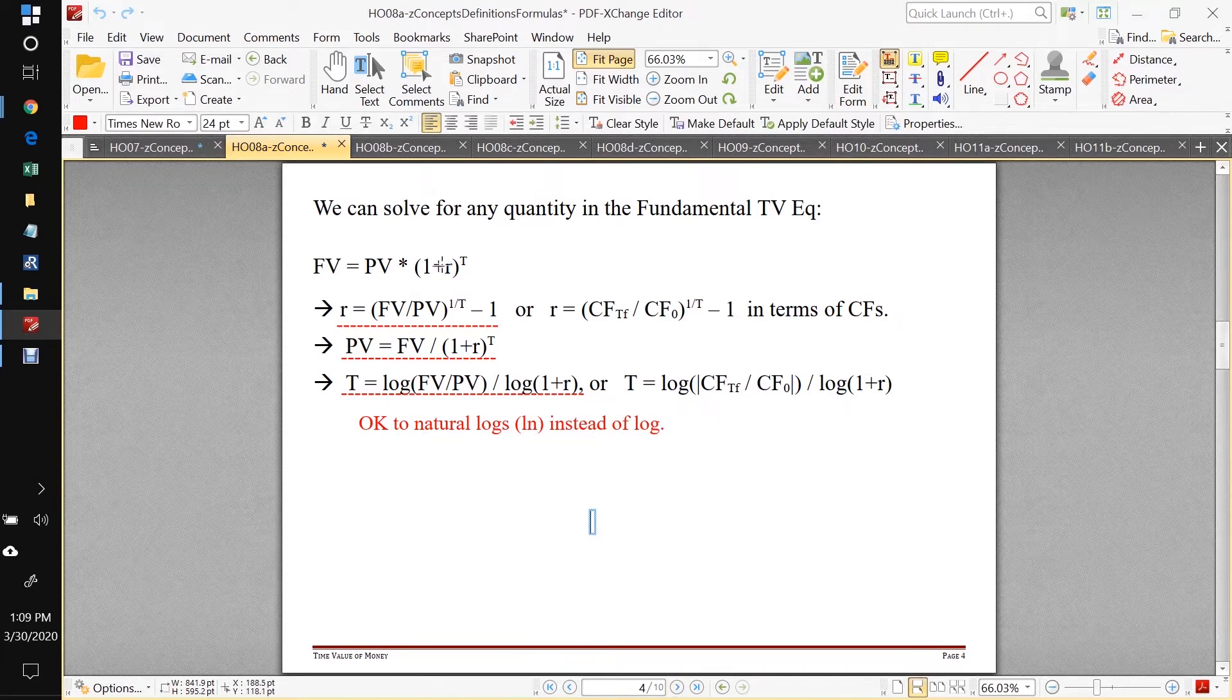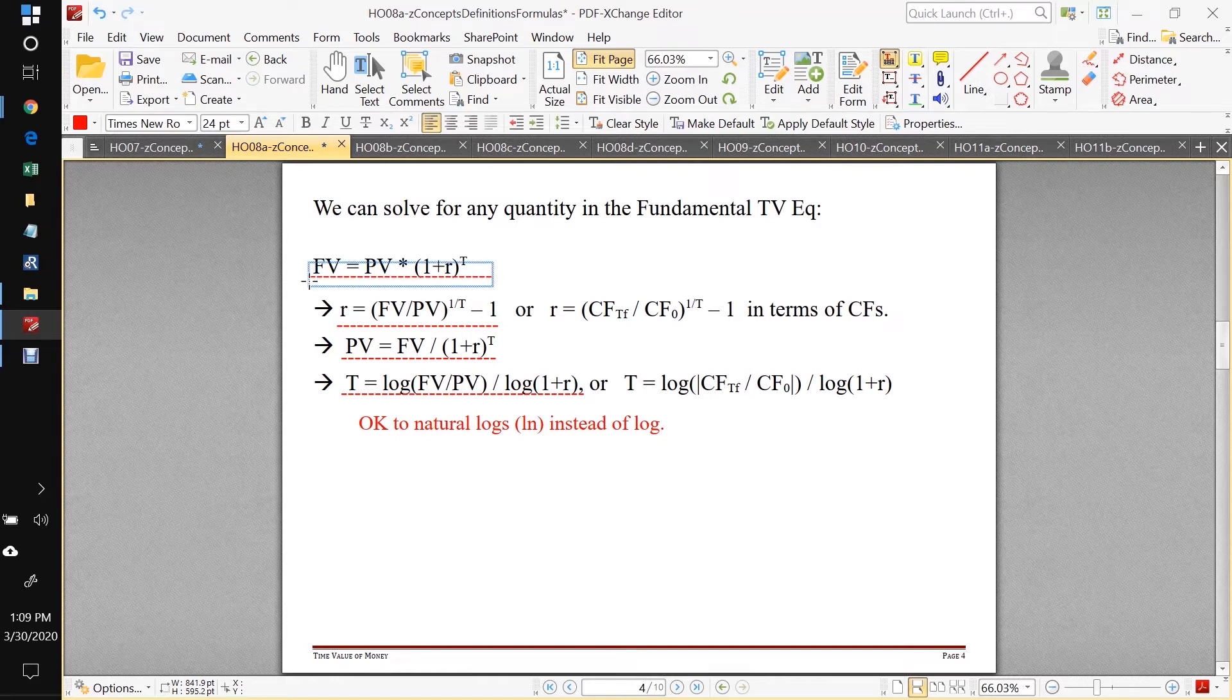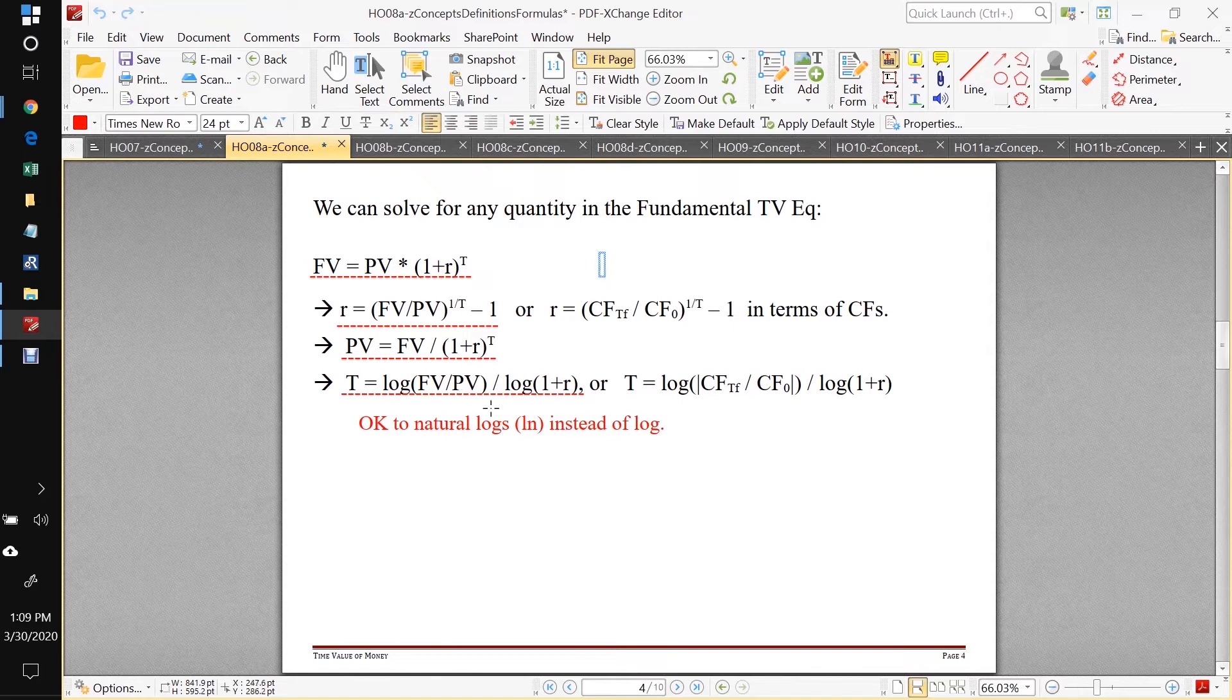So we sort of beat this equation to death algebraically, just solving for every possible thing we could. This is the only version of the fundamental time value equation that I remember. And then I just do the algebra as needed to solve for whatever I need to solve for.